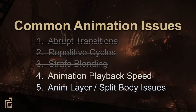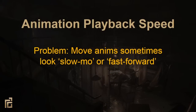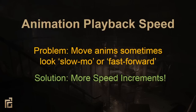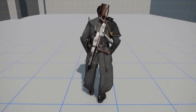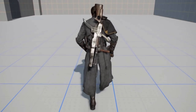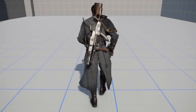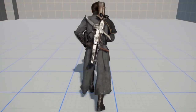Next let's talk about issues with animation playback speed. In the past, we were limited to discrete movement types like walk and run, which were sped up or slowed down to match the player's stick deflection. This leads to unnatural movement that looks either slow-mo or fast forward. To fix this, we simply added more speed increments. We used phase blending to synchronize all of these movements and play the appropriate ones based on stick deflection. We have four standard move speeds: slow walk, walk, jog, and run. The result is sensitive player controls with believable character movement.